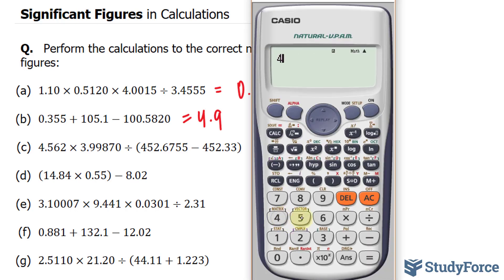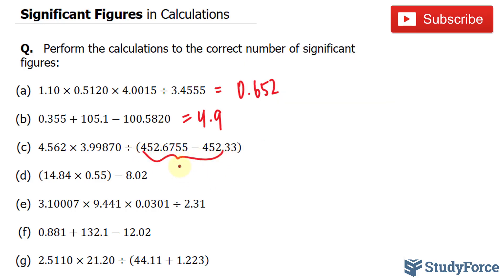We'll end up with 452.6755 minus 452.33. Our answer here needs to be two decimal places long because this has two decimal places, this has four. This gives us 0.3455. This becomes 0.3455. Now to reflect the two decimal places that I mentioned earlier, what I'll do is place a dot underneath the number that marks the number of significant figures.